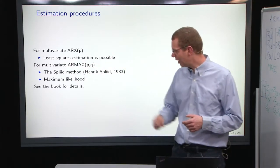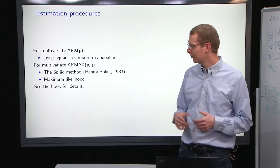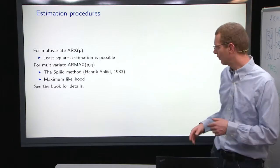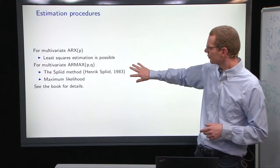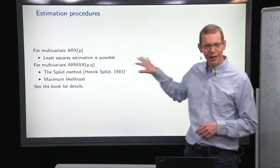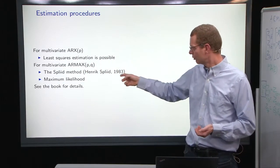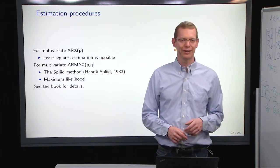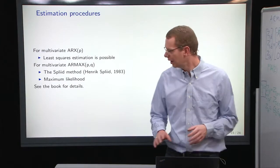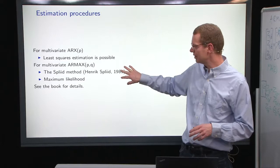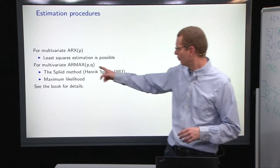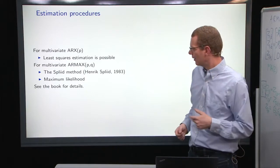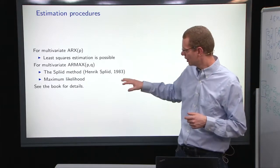If you have a multivariate ARMAX model, then there are basically two options. The so-called Splid methods, due to Henrik Splid, a former professor here at DTU Compute. We'll talk more about that in the next lecture and show you, but have a look at the paper here as preparing for that. It has some quite advanced linear algebra in some places. Basically, it's trying to do some least squares approximations to the MA part and doing some repeated modeling to figure out how to model this.